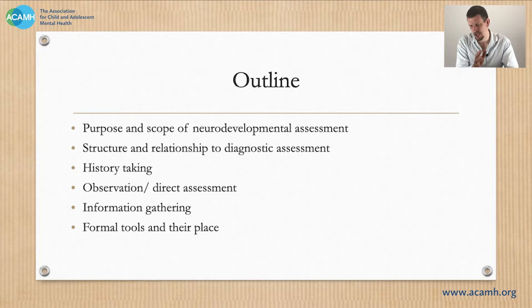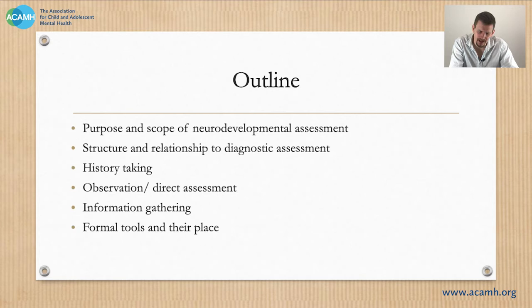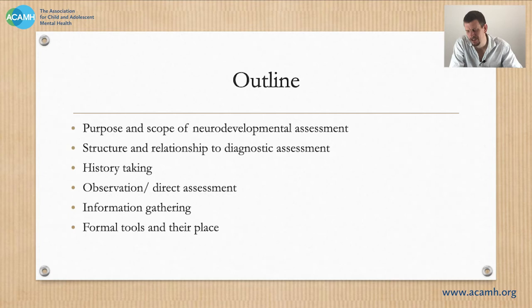This is the second of two talks I've recorded this morning, the first being on child development and giving you the foundations of child development and how it actually happens. It's probably helpful if you don't have a grounding in child development to go back and look at that one first. What I'm going to do in the next hour or so is talk about the purpose and scope of neurodevelopmental assessment, why we do it, its structure, how it's structured, what the information is and how we put it together, and also what its relationship is to diagnosis. I want to flag immediately that this is not going to teach you how to make diagnoses, which would be ridiculous in an hour. But I will take you through a scheme of history taking, observation, information gathering and some thoughts about formal tools.